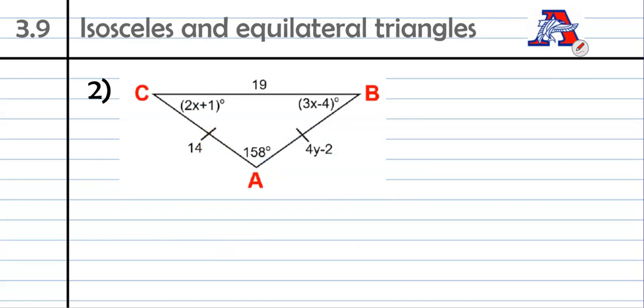This example here is going to take us a little bit of time. We have quite a bit to figure out. So make sure you pause, get this written down, and then hit play so that we can do it together. So we once again have an isosceles triangle, but we have both an x and a y to figure out here. So I am actually going to start with the y because I think that's going to be the easiest place to start.